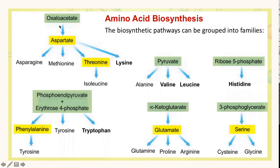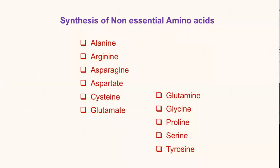As you can see here in the chart, oxaloacetate produces aspartate and from aspartate different amino acids are being formed. Likewise, pyruvate and alpha-ketoglutarate all form precursor molecules for the synthesis of different amino acids. 3-phosphoglycerate produces serine, and serine in turn produces cysteine and glycine. Likewise, phosphoenolpyruvate and erythrose 4-phosphate can produce phenylalanine, tyrosine, and tryptophan. Let's check out some of the non-essential amino acids and how they are being formed from all these different precursor molecules.